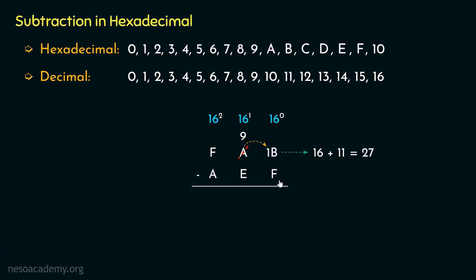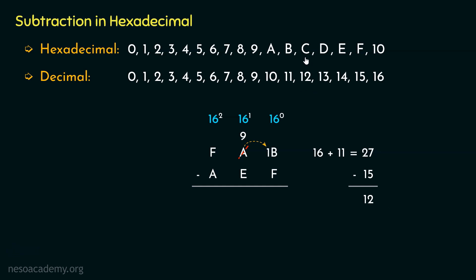Now, what about F — the subtrahend? We all know it is 15. If we perform the subtraction between 27 and 15, the difference is 12: 7 minus 5 is 2, and 2 minus 1 is 1. This is decimal subtraction. And 12 in decimal is C in hexadecimal. So for the least significant digit, the difference is C.